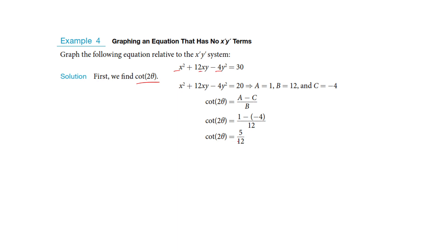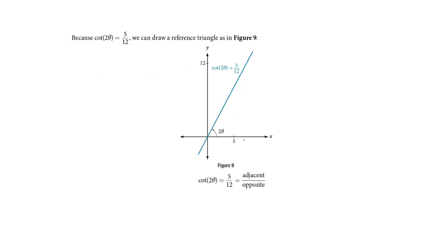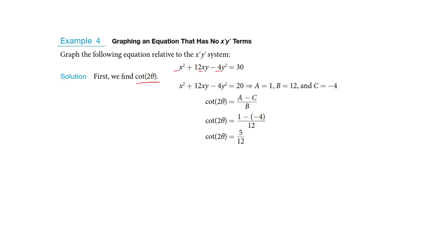We get cotangent of 2 theta is 5 over 12. So we have adjacent over opposite, and now they've chosen another one again. You would just do the Pythagorean theorem to finish this, but this is a 5-12. This is always 5-12, 13. That's a special one.